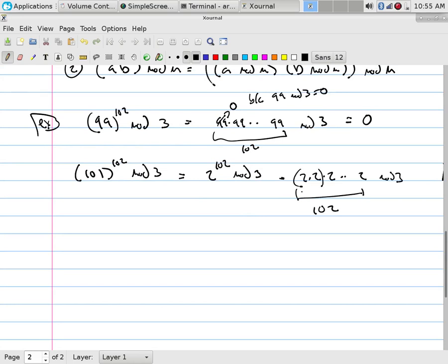But by the way, what's 2 times 2? 4. What's 4 mod 3? 1. So every 2 times 2 that you see being 4, but that's congruent under mod 3 to 1. So every pair of 2's that you see is what? 1.